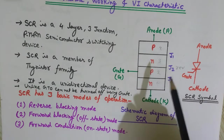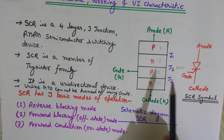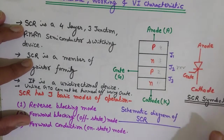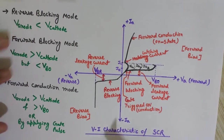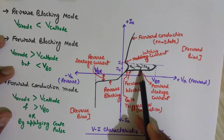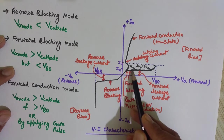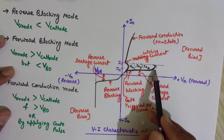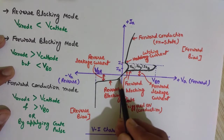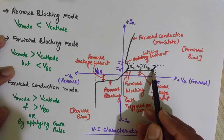If we keep increasing the anode voltage compared to the cathode, a stage will come where junction J2 breaks down and a large amount of current starts to flow. The voltage at which this breakdown of the reverse-biased junction J2 occurs is known as the forward breakover voltage, VBO. You can see this in the VI characteristic — before VBO, only a small forward leakage current flows because J2 is reverse biased.